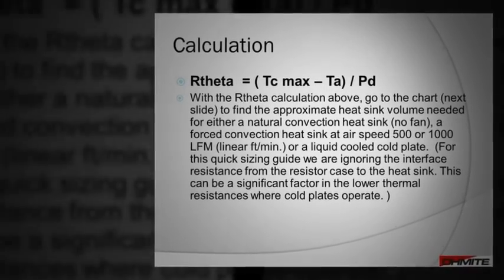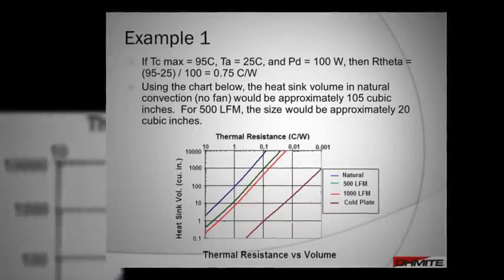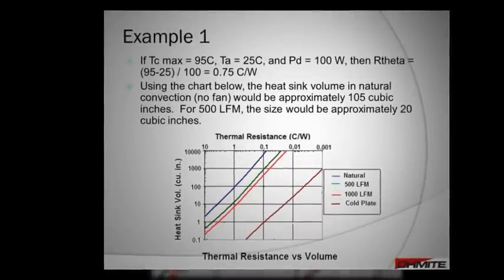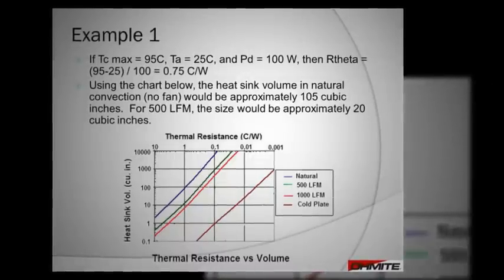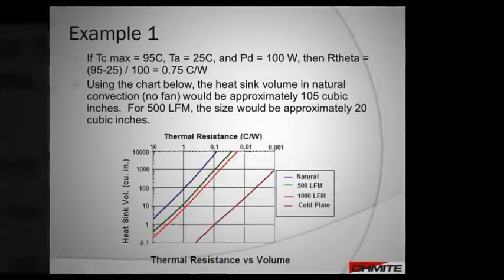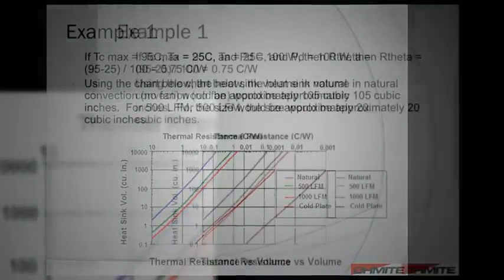For the first example, we will use a maximum case temperature of 95 degrees Celsius, ambient temperature of 25 degrees Celsius, and wattage dissipation of 100 watts. These values give us 0.75 degrees Celsius per watt.